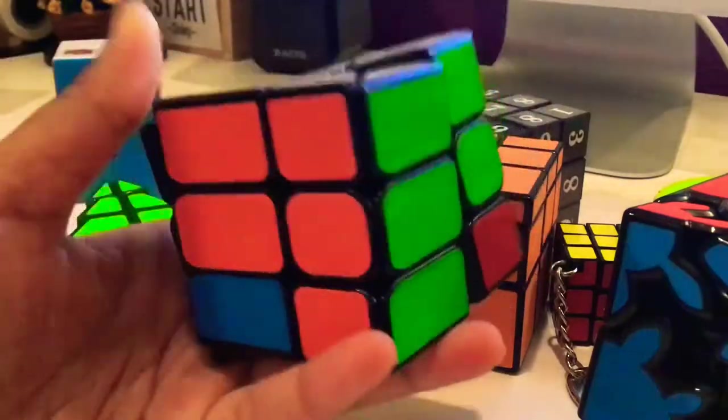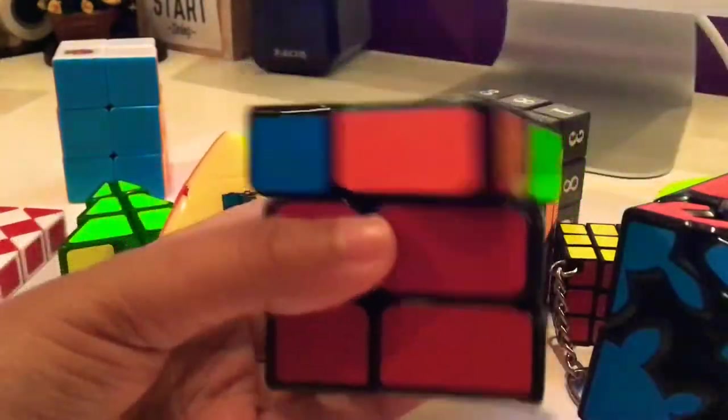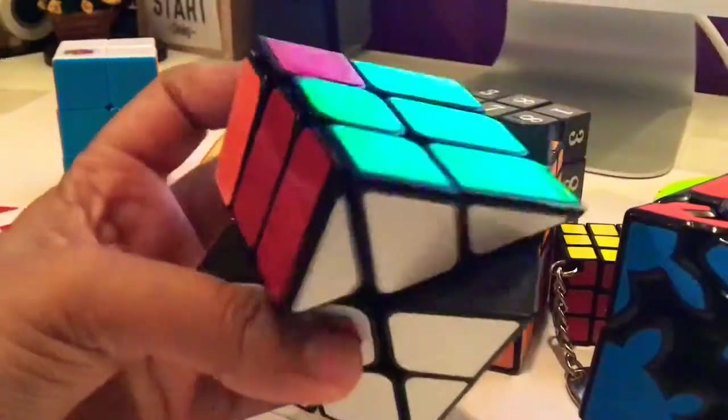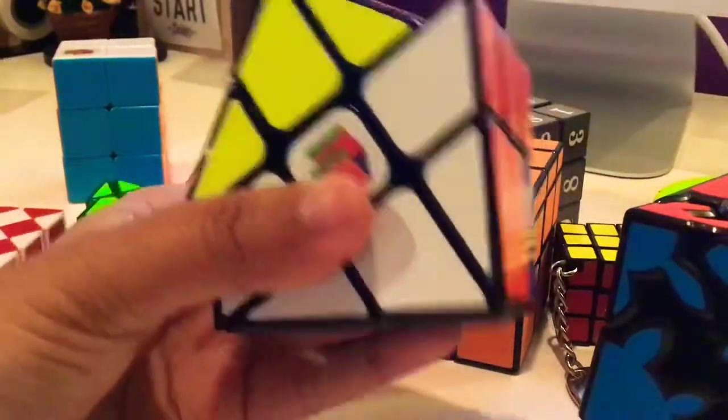Next up I have this YJ Guanlong windmill cube. I just don't know how to solve the last layer on this, but it's pretty easy to solve besides the last layer. And it's a shape shifter.